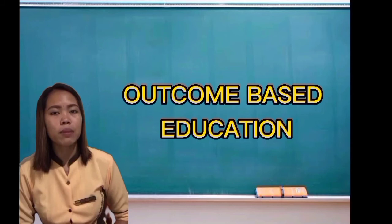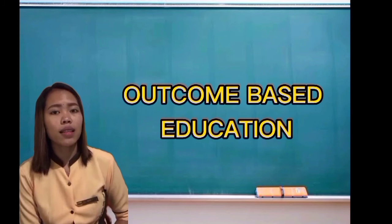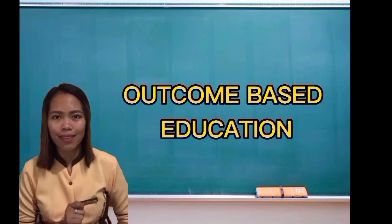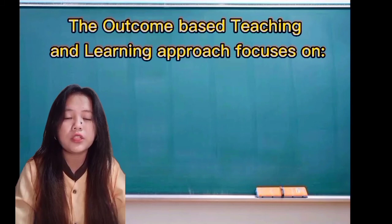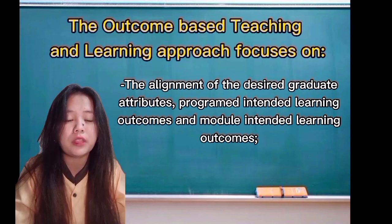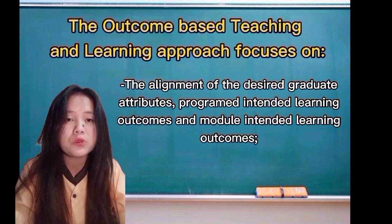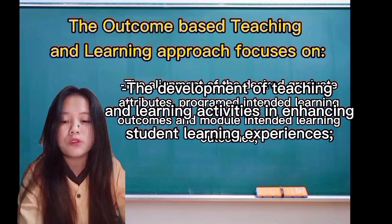Under the OBE model, education agencies may specify any outcomes such as skills or knowledge, but not inputs such as field trips, arrangements of school days, and teaching styles. The outcome-based teaching and learning approach focuses on the articulation of a liberal plus professional educational model and the desired graduate attributes. It also focuses on the alignment of desired graduate attributes, program-intended learning outcomes, and module-intended learning outcomes. A learning outcome should be a clear and specific statement identifying what students must demonstrate to successfully pass their course.